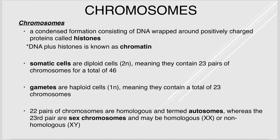N equals 23, the haploid number. Somatic cells are diploid — 2 times 23 equals 46. Gametes (sperm and egg) are haploid, with just 23 chromosomes. When sperm and egg meet, that's where you get your 46.